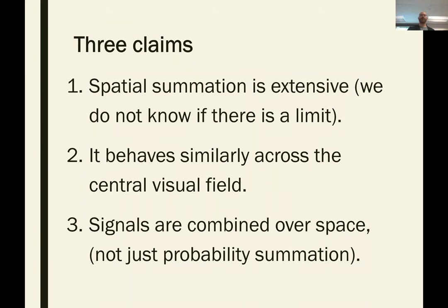Getting to the actual claims and findings: as I mentioned, we're going to talk about the summation being extensive — to the point that we don't know if there's an actual limit on how large it goes — that it behaves similarly across the central visual field, and that signals are being combined over space and not just by probability summation. Hopefully everyone is now on board to understand what these three claims are saying.